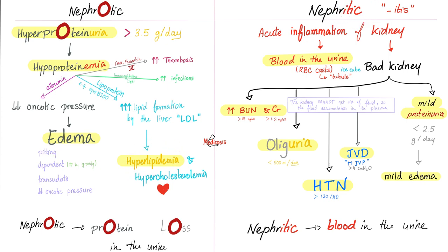Nephritic syndrome — itis, inflammation — means I'm inflamed and bleeding with red blood cell casts, mild proteinuria, mild edema. Don't confuse this with the nephrotic range proteinuria and generalized severe edema. Don't forget the two H's: hematuria and hypertension with jugular venous distension. I also have kidney injury: elevated BUN and creatinine, oliguria.